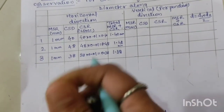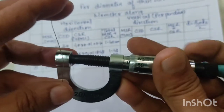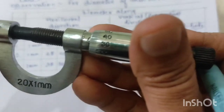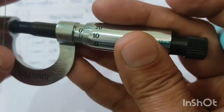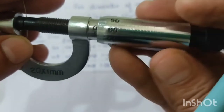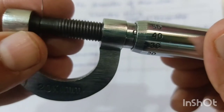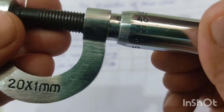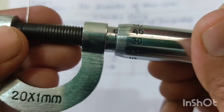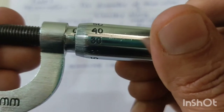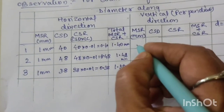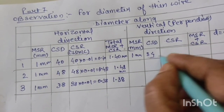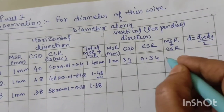Now taking the perpendicular (vertical) direction: I keep the wire perpendicular. The CSD is now 34, and MSR is 1 mm. CSR = 34 × 0.01 = 0.34 mm. Total reading = MSR + CSR = 1 + 0.34 = 1.34 mm.